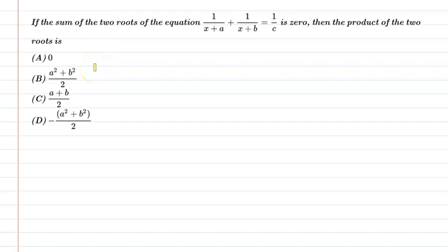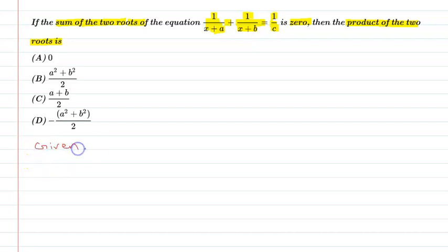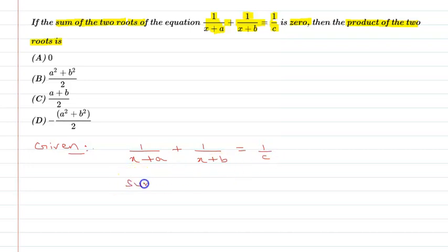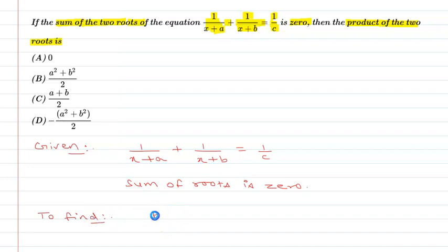Hello friends. First of all, let us understand the question. The question is: the sum of the two roots of the equation 1/(x+a) + 1/(x+b) = 1/c is 0. Then find the product of the two roots. So our equation is given: 1/(x+a) + 1/(x+b) = 1/c, and the sum of the roots is 0. Let's find the product of roots.